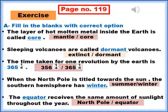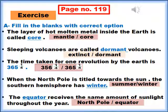Now move on to the exercise on page number 119. Fill in the blanks with the correct option. Number one: The layer of hot molten metal inside the earth is called core. Mantle and core are the options. The correct answer is core.